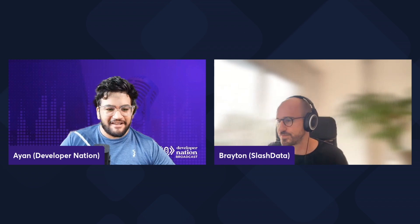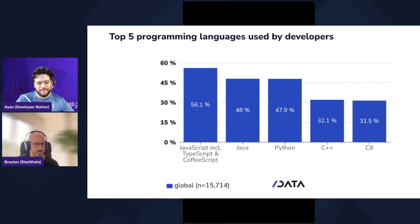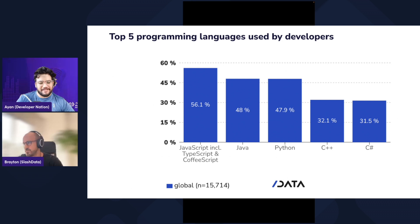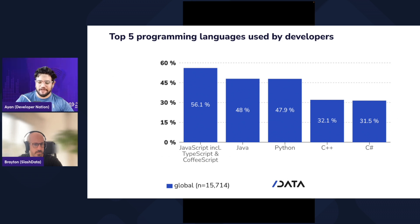Let's move to the next interesting chapter. This one shows the top five programming languages used by developers — a topic of debate in communities around the world. We've seen JavaScript leading for many, many years now. Let's break down this insight and talk more about where developers are using this language and what accounts for its growth and popularity.